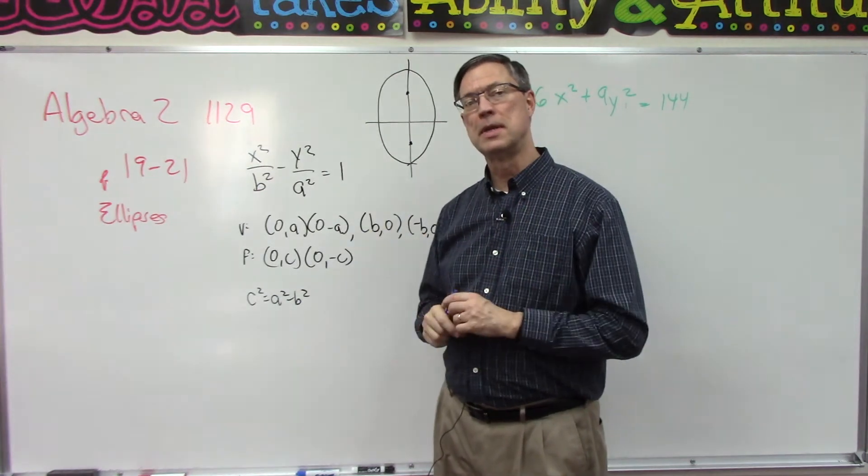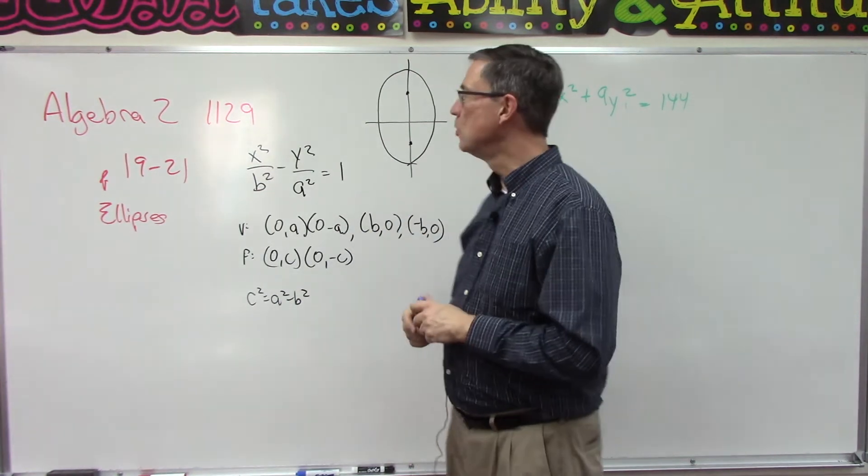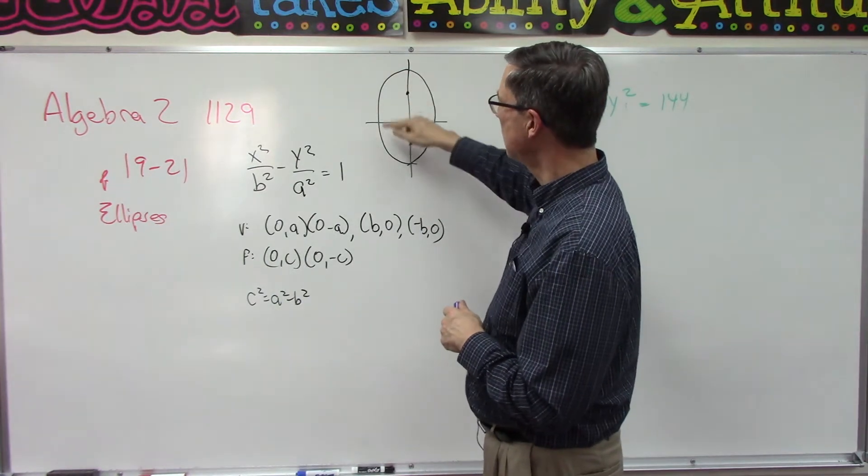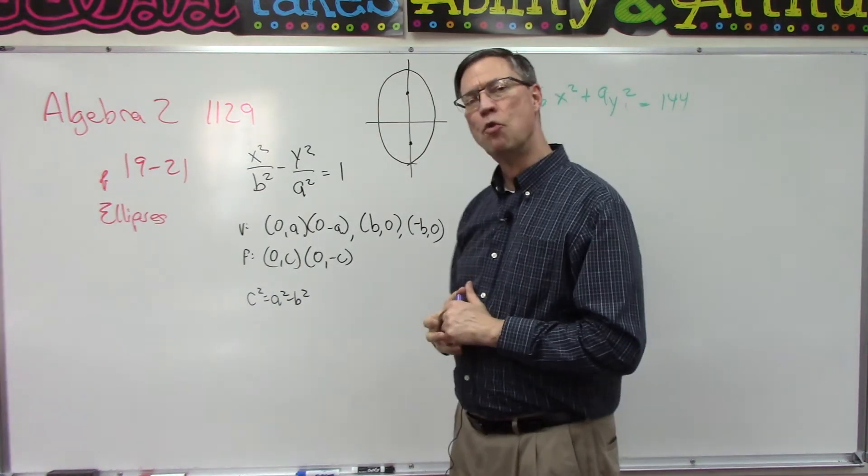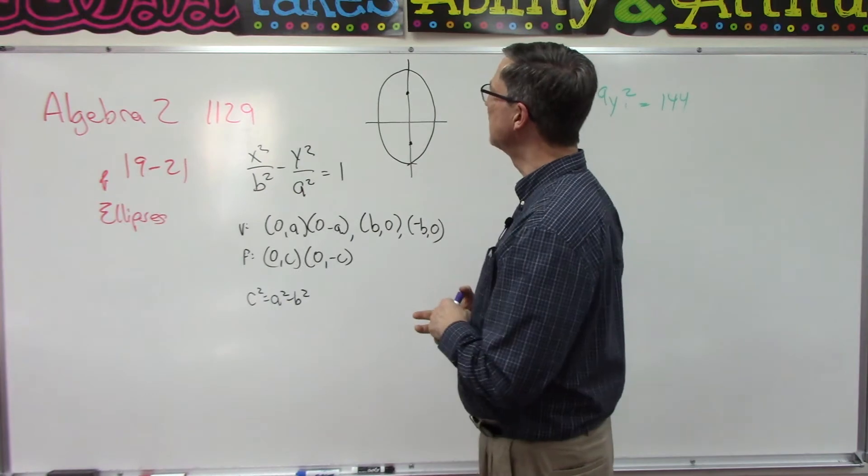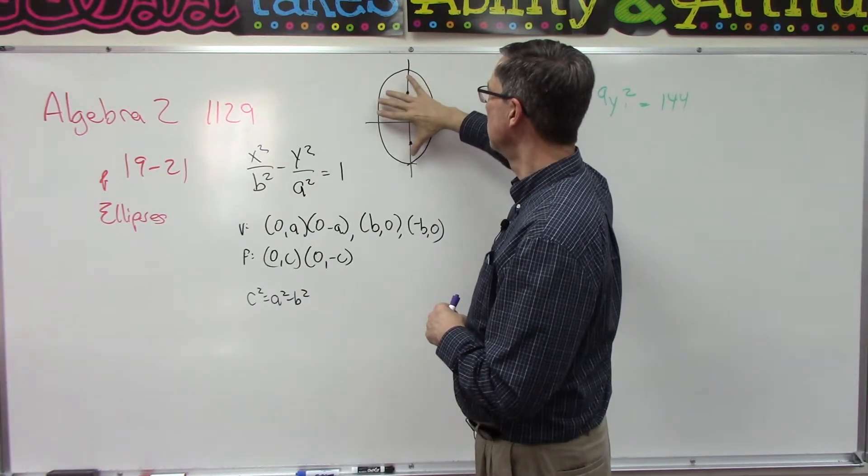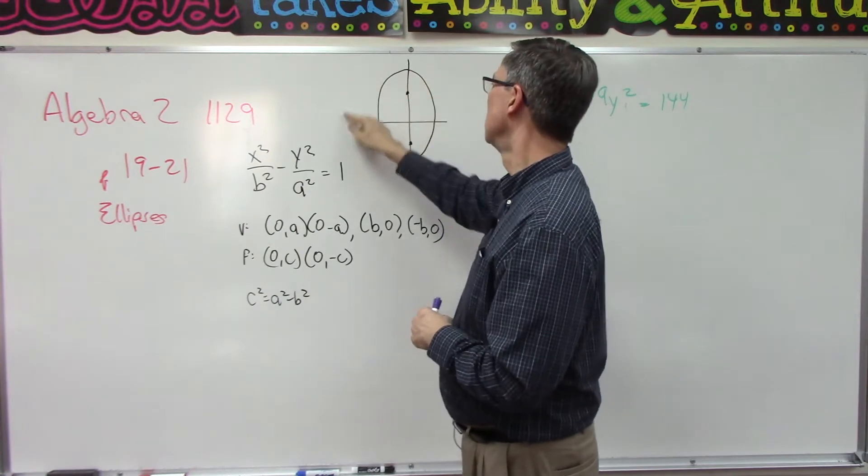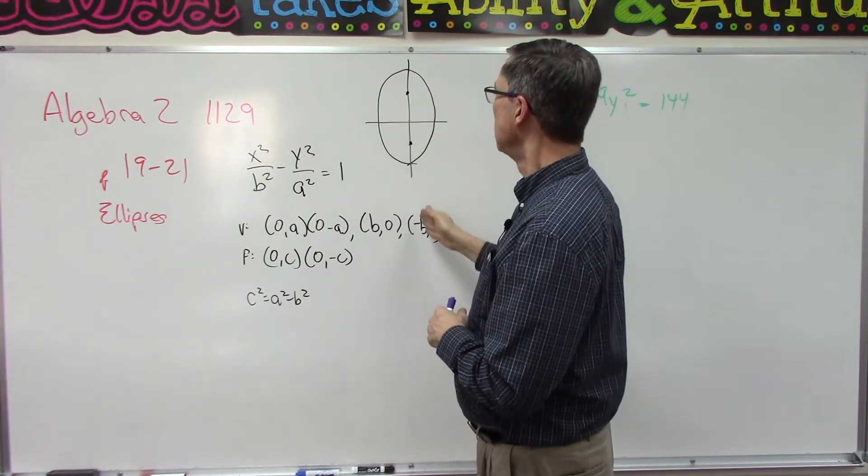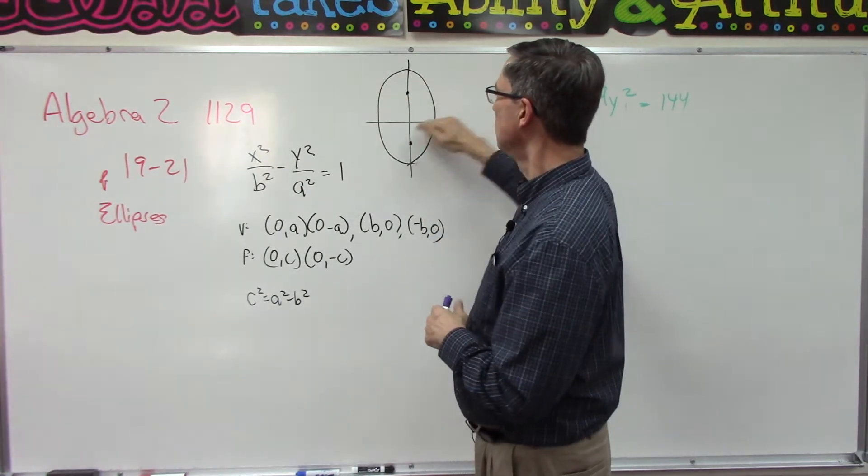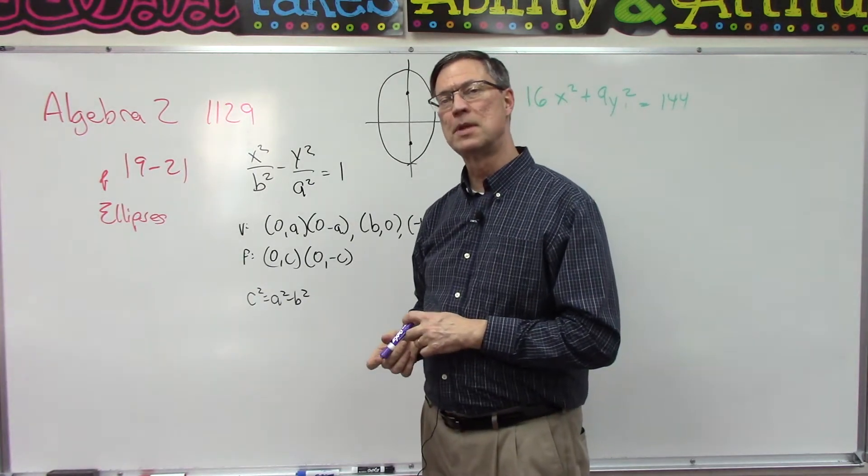An ellipse might look like an oval to you. Technically it's not an oval, and it could be oriented either this way or going this way. Down through the middle and across the middle are two axes.